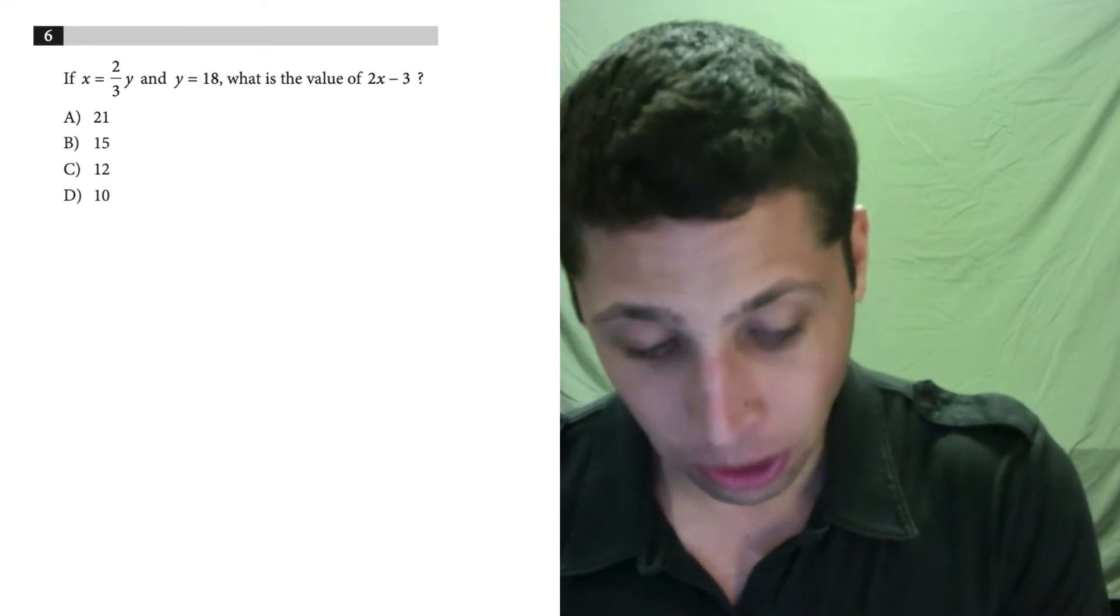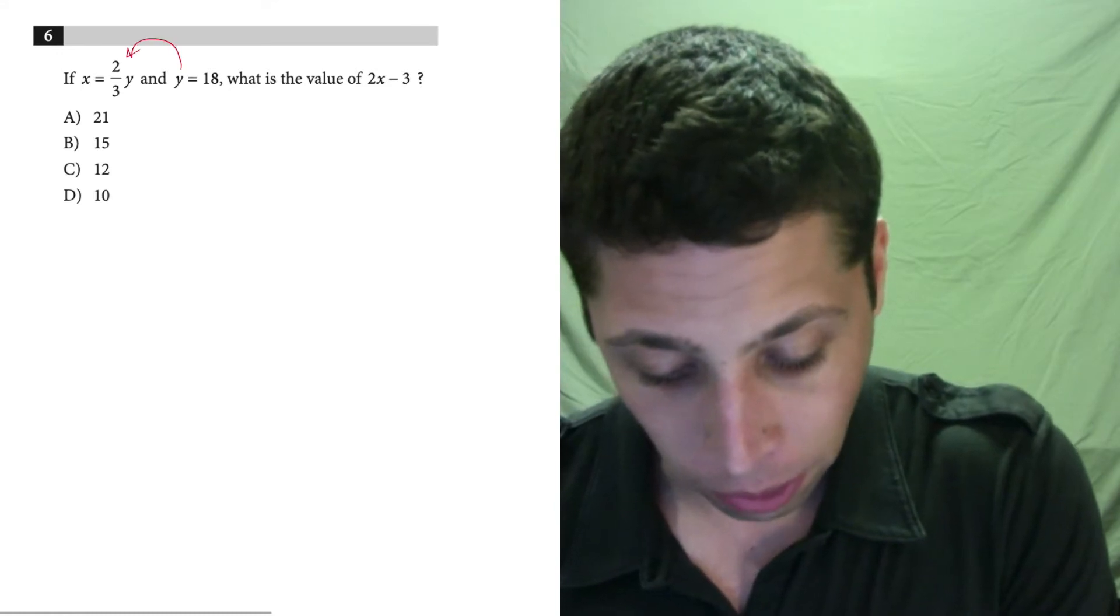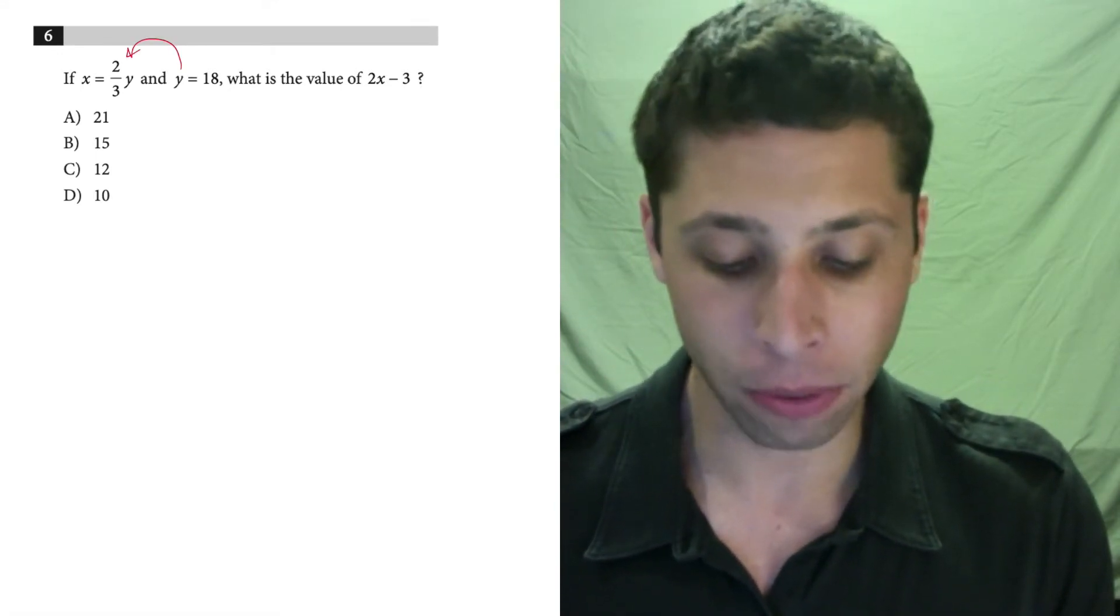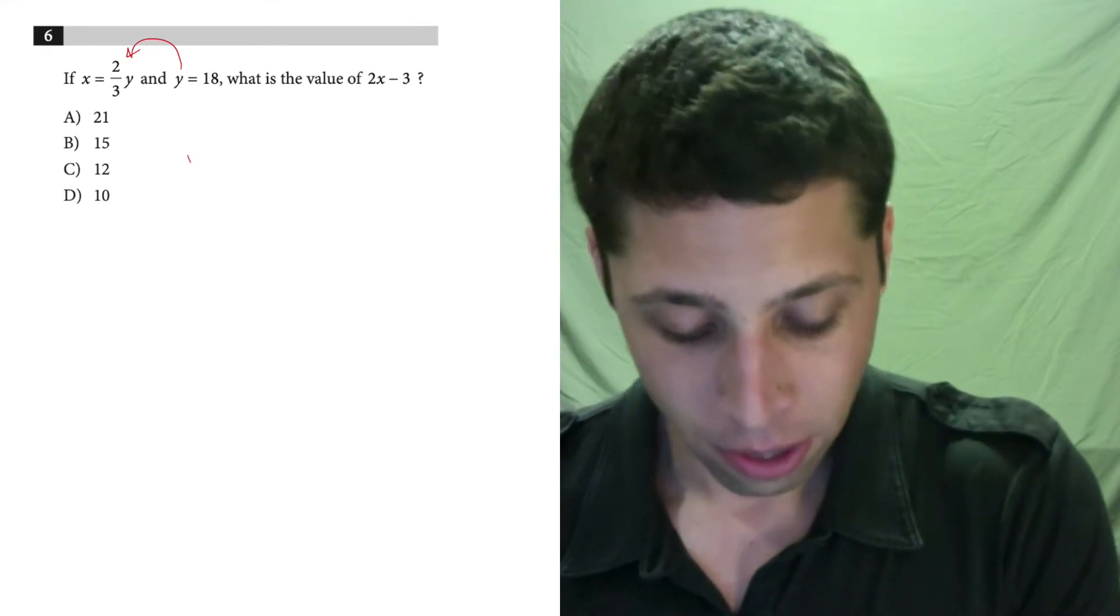So first of all, we're given two equations, but they're pretty straightforward. y equals 18. That just means we can substitute 18 in for y in this equation. Don't do this in your head. Just write it out.